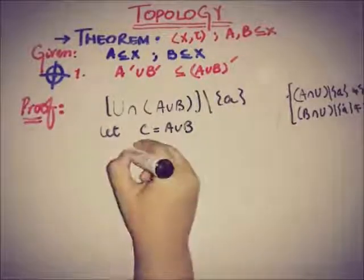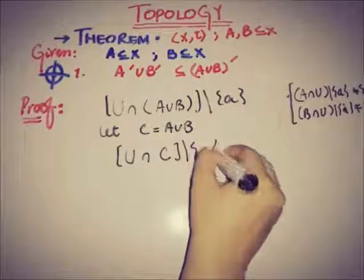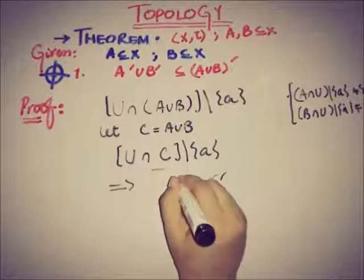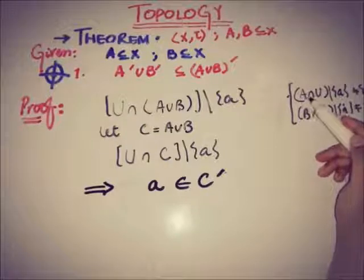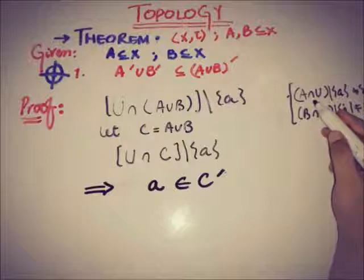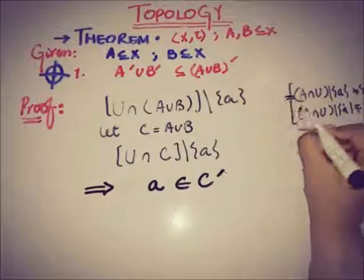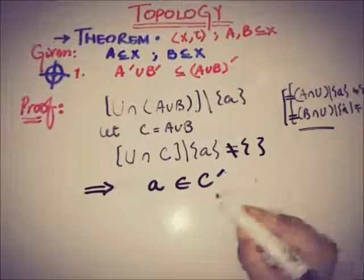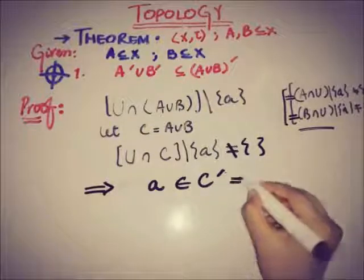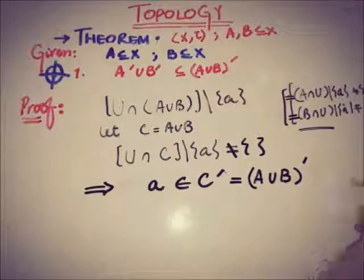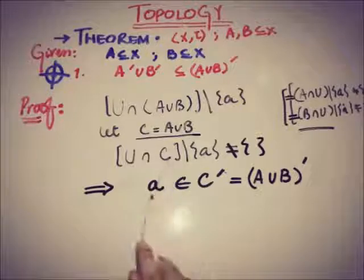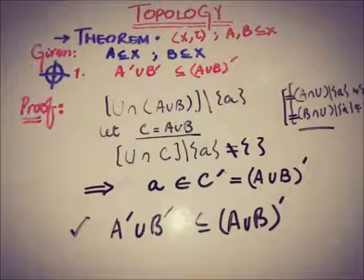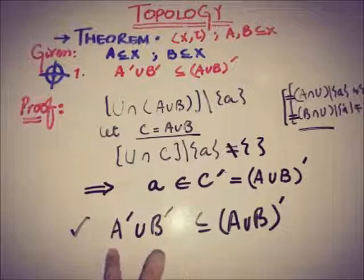So a belongs to C', the accumulation set of C = A∪B. Since either (U∩A)\{a} or (U∩B)\{a} is non-empty, their union is also non-empty, confirming a ∈ (A∪B)'. Thus A'∪B' ⊆ (A∪B)', completing the first part.